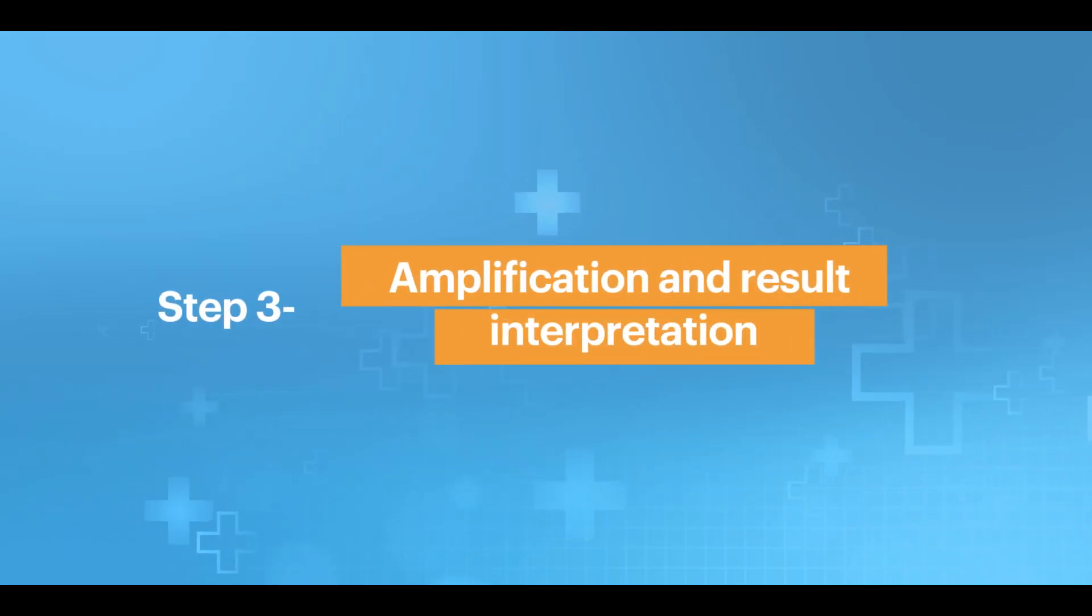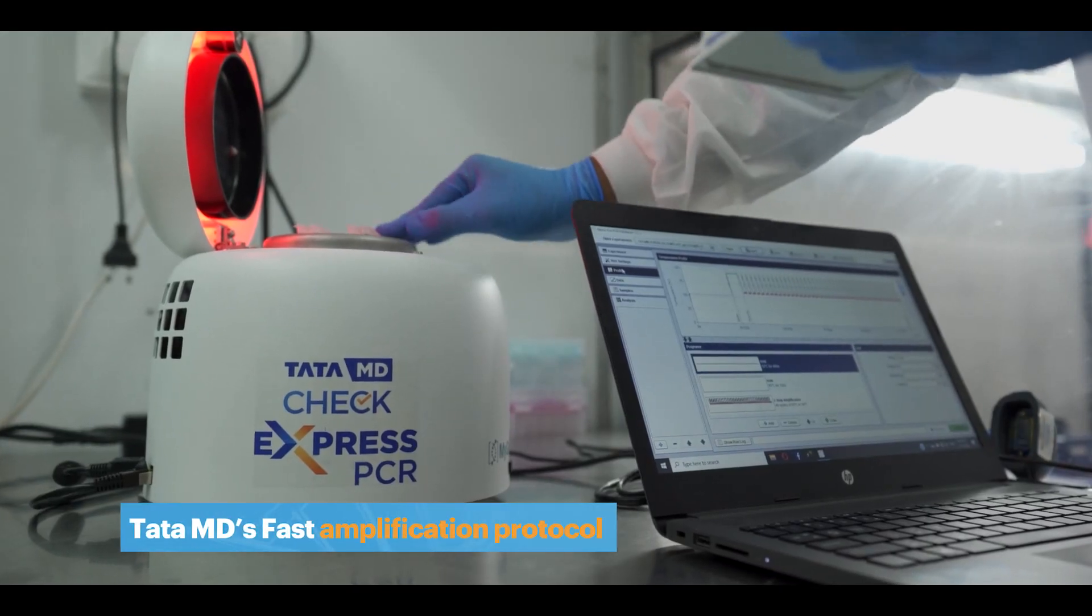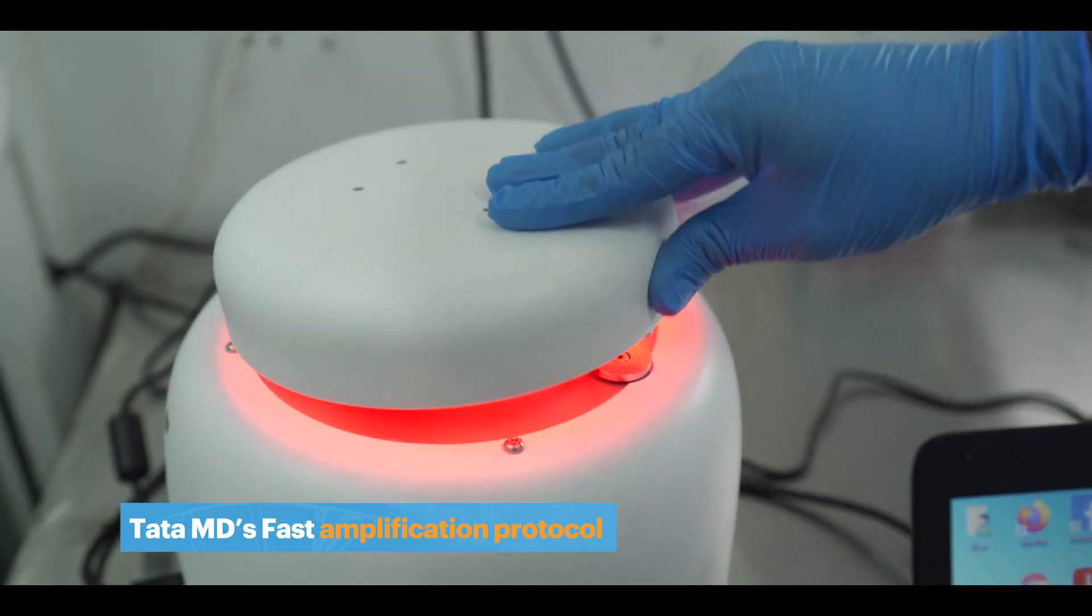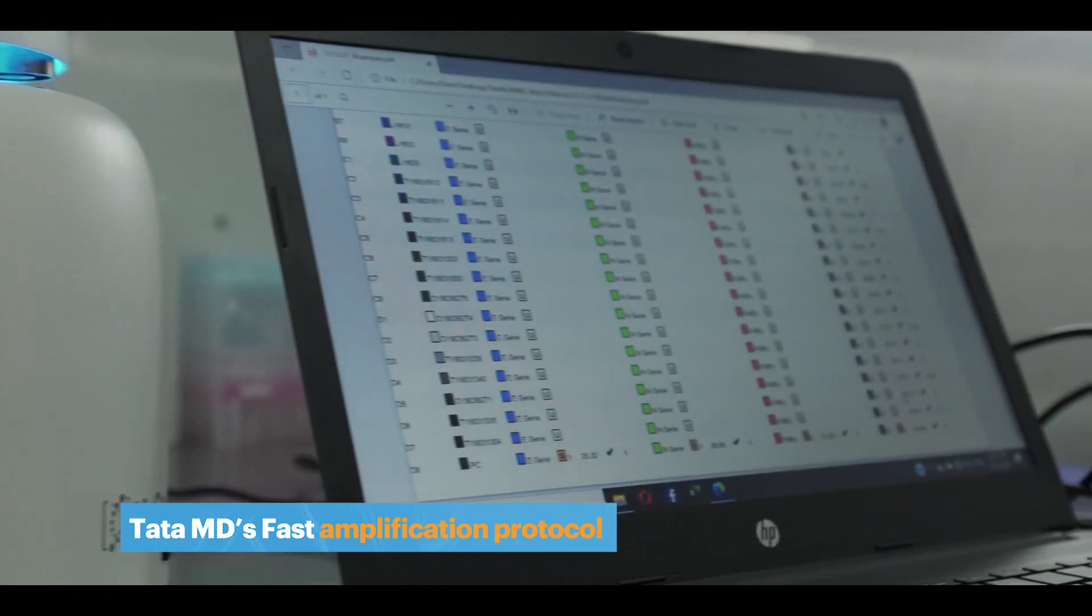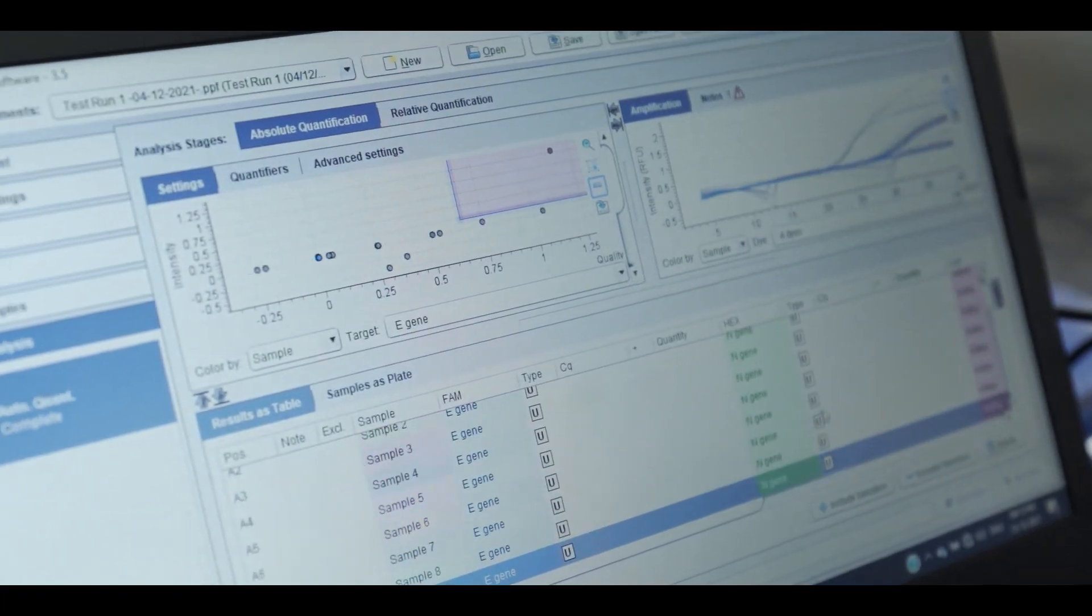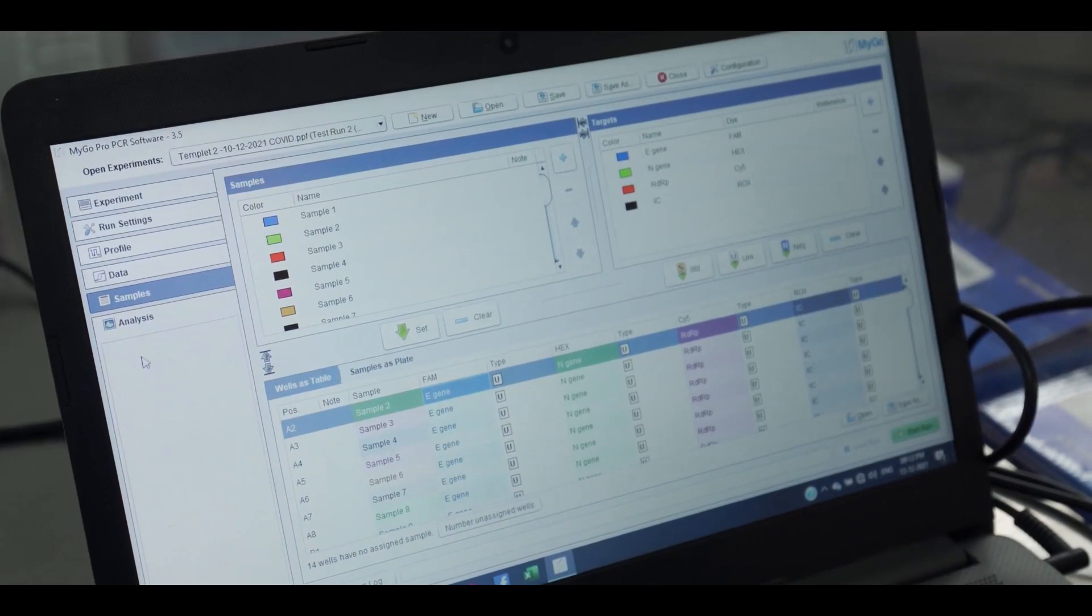Step 3: Amplification and result interpretation. The strip is then loaded into the express PCR analyzer and a pre-programmed protocol is run. In just 45 minutes, results are ready to be interpreted.